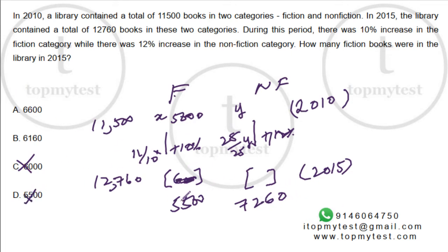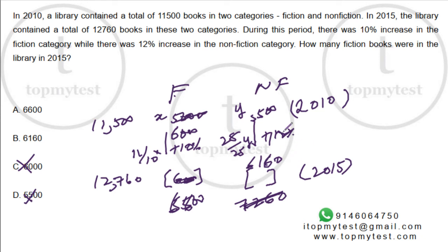Let's put 6,600. If I put 6,600, this number would be 6,000, which means this number would be 5,500, and this number would be 6,600. So 6,160 — that is divisible by 28. So you'll get 5,500. So option A will be our correct choice. Key point to note is that you are looking at 2015 as the final answer, not 2010. Then we use the options to eliminate. That completes this particular question.